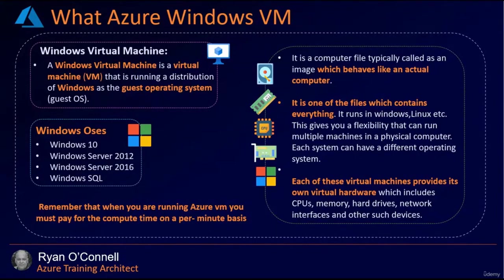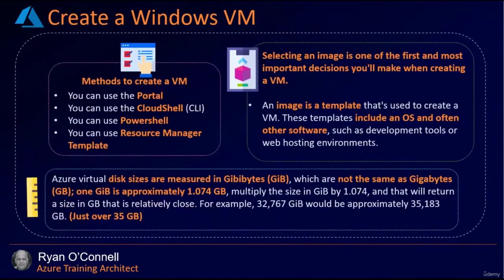It's a computer file — typically called an image — that behaves like an actual machine. It contains everything, runs Windows or Linux, and gives you the flexibility to run multiple machines on a physical computer, each with a different operating system. Each virtual machine provides its own virtual hardware including CPU, memory, hard drives, network interfaces, and other such devices. When creating a Windows VM, you can do so through the portal, Cloud Shell or CLI, PowerShell, or an ARM template — also called a Resource Manager template.